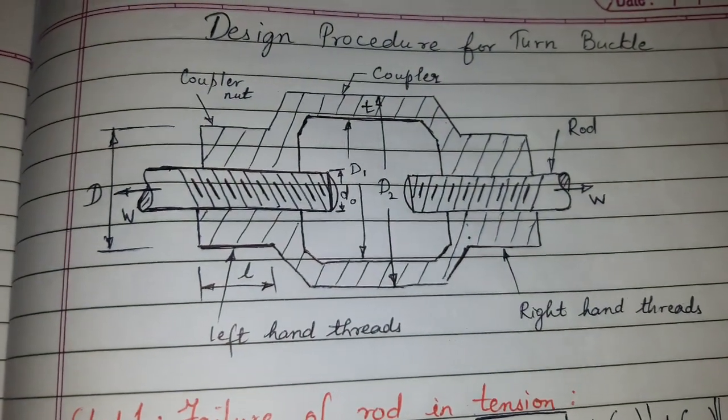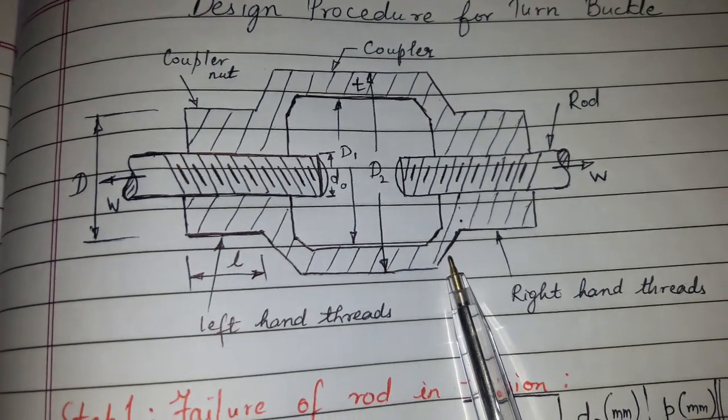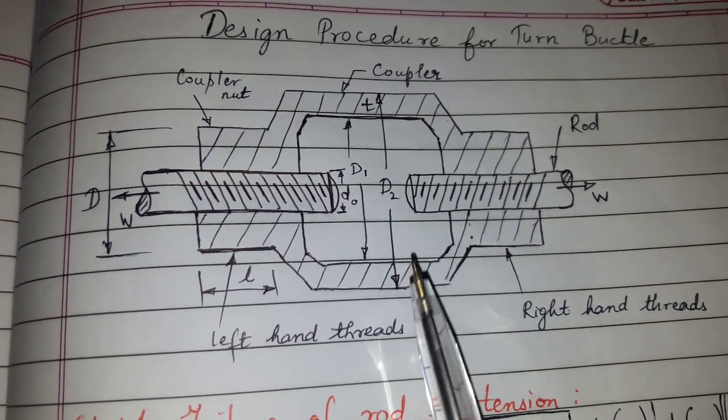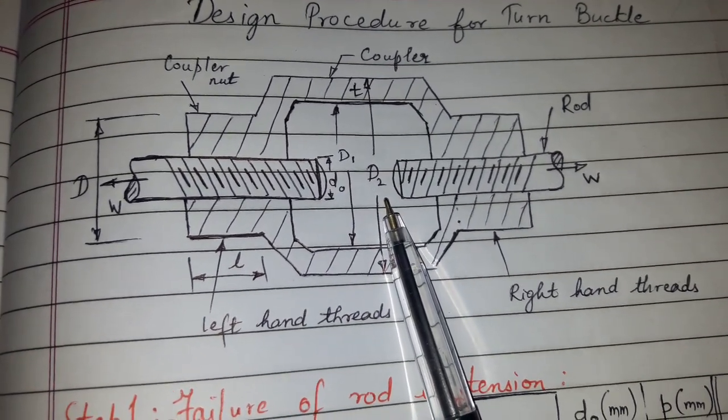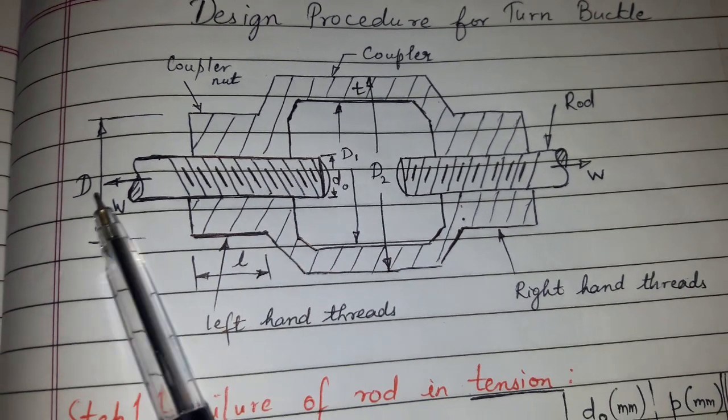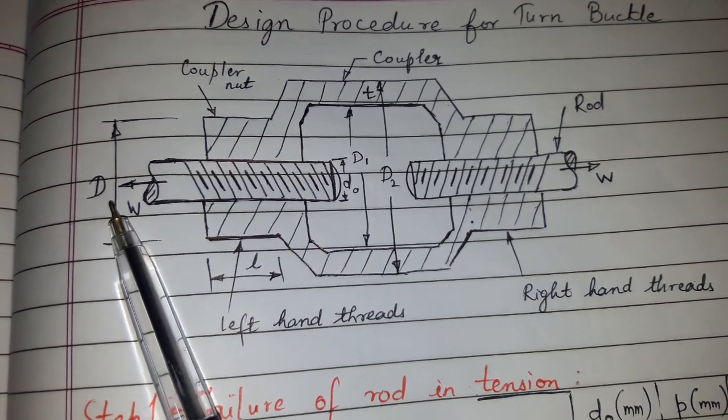Today's topic of discussion is the design procedure for turnbuckle. This is the drawing or sketch of a turnbuckle. This is the coupler with inner diameter D1 and outer diameter D2. This is the coupler nut with diameter D.